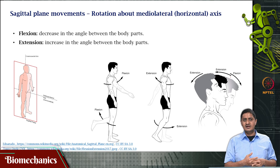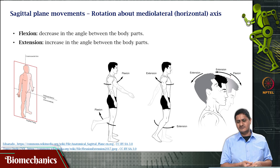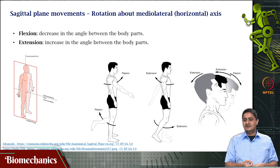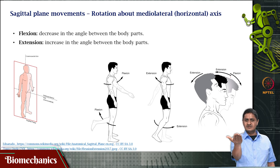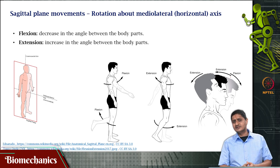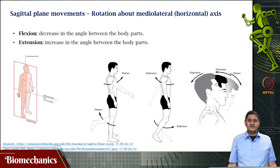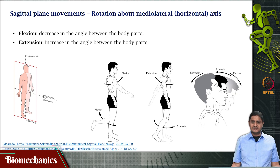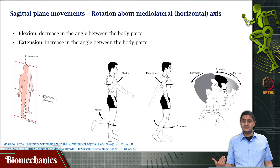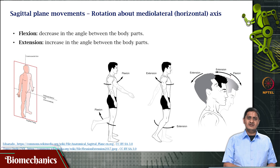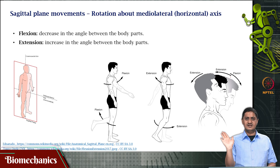Flexion is a reduction in the joint angle between body parts. Of course, this is a simple example — there are some cases in which it is not so clear. For example, at the wrist: is that flexion or extension? Flexion, because I am measuring this with reference to the anatomical reference position. I am reducing the wrist angle — this is called wrist flexion, and the other direction is called extension.